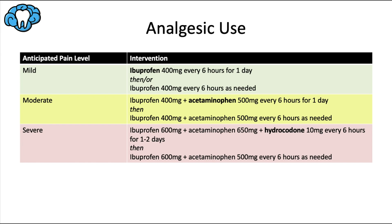So what can we do to manage acute dental pain? Oral analgesics are the best solution to target the source of pain, usually as part of the inflammatory process. In this table we have anticipated post-procedural pain on the left and the analgesic intervention on the right. For mild pain, the ADA recommends 400 milligrams of ibuprofen every six hours for one day, then every six hours only as needed. Notice that all pain levels include ibuprofen — NSAIDs like ibuprofen have been shown to be more effective at reducing pain than any other analgesic and are therefore the first-line therapy for acute dental pain.